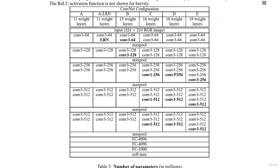Focusing on VGG16 with 16 weight layers: the input is 224x224x3 for an RGB image, followed by two conv layers with 64 3x3 filters, then max pool, two conv layers with 128 3x3 filters, then max pool, three conv layers with 256 3x3 filters, then max pool, three conv layers with 512 3x3 filters, then max pool, another three conv layers with 512 3x3 filters, then max pool, followed by three fully connected layers and finally softmax.